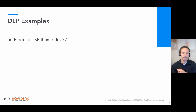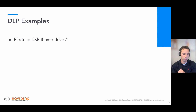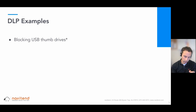Some examples of DLP: you might want to block USB thumb drives across your organization so that if an employee plugs in a thumb drive, or a bad actor, nothing happens — it doesn't work.